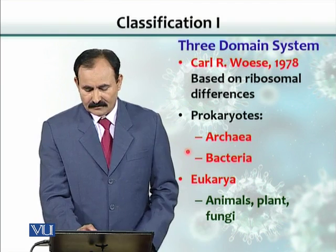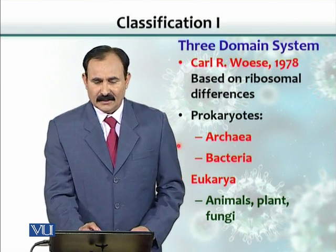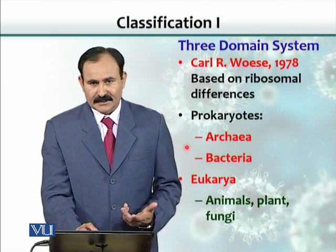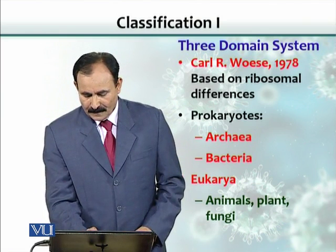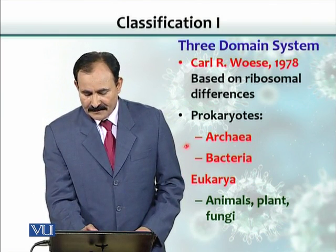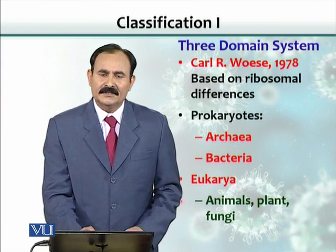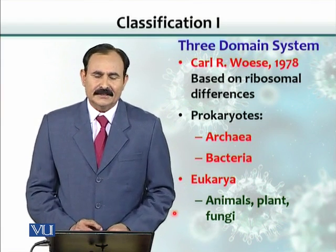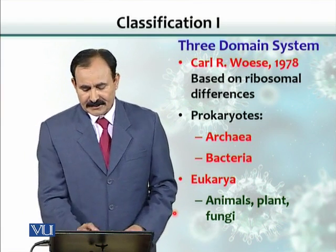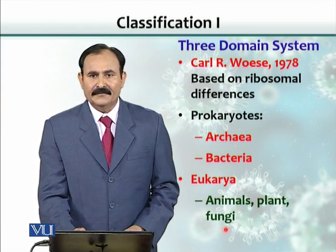There are some differences in the cell wall, and also in habitat. All organisms that have a well-established nucleus were placed in Eukarya, and they include animals, plants, and fungi.